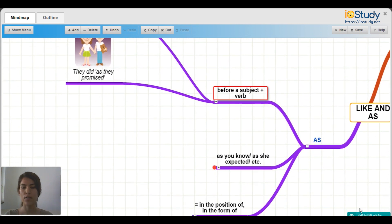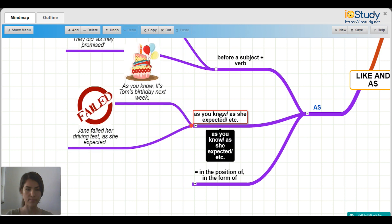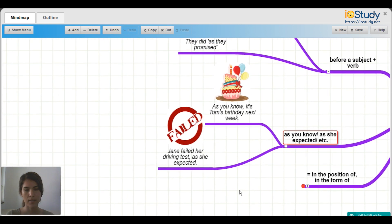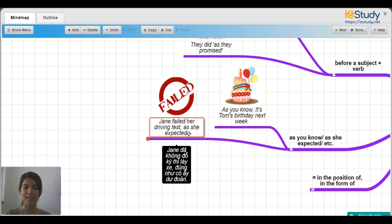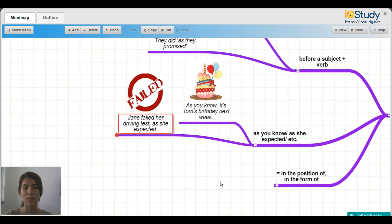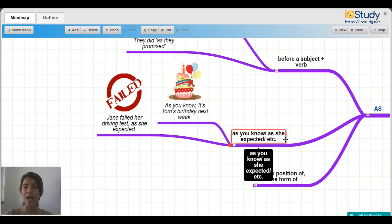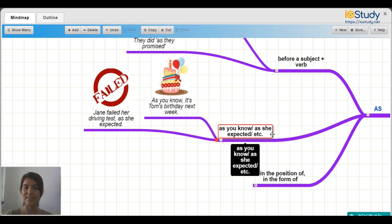Okay, now let's go down to as you know, as she expected, etc. Example number one. As you know, it's Tom's birthday next week. And Jane failed her driving test, as she expected. So in both of these, we're talking about as you know, as she expected, etc. So things we know and expected.